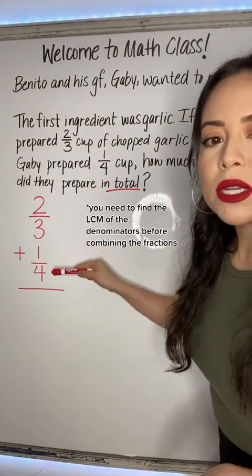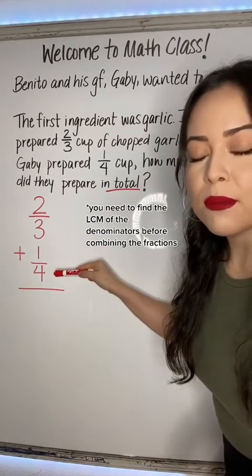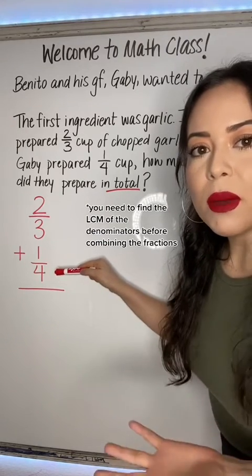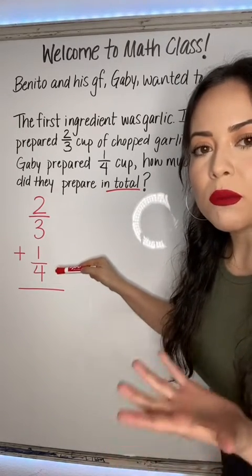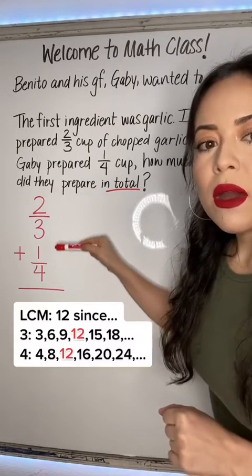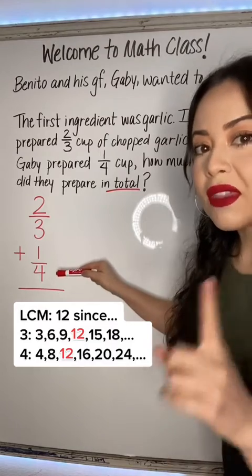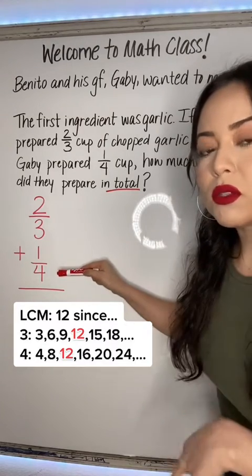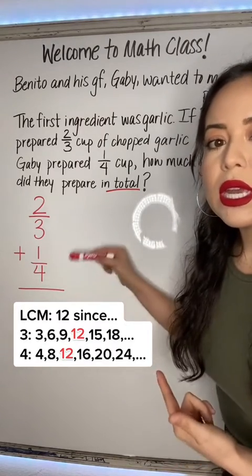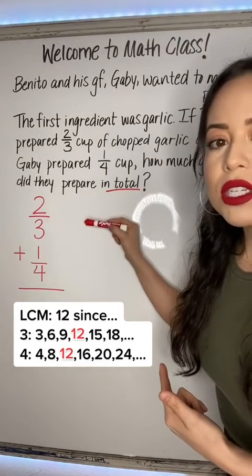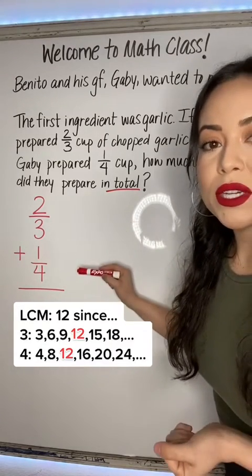Notice how these denominators are not the same. So let's think about the least common multiple — that would be for three and four — and that's going to be 12. So we're gonna create equivalent fractions with a denominator of 12.